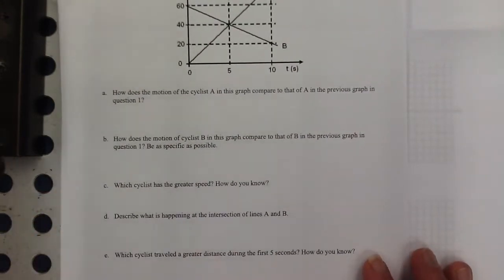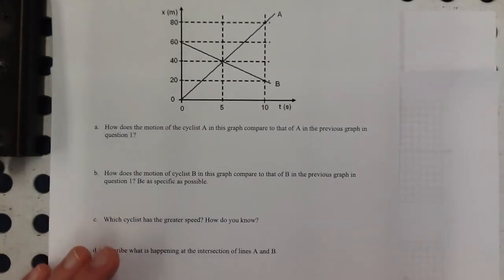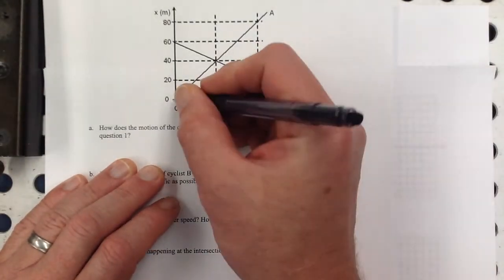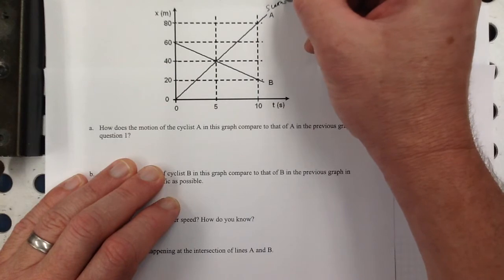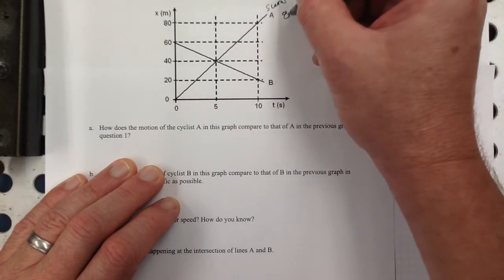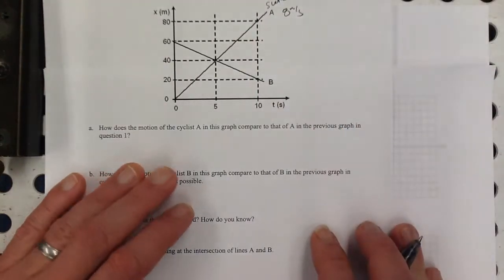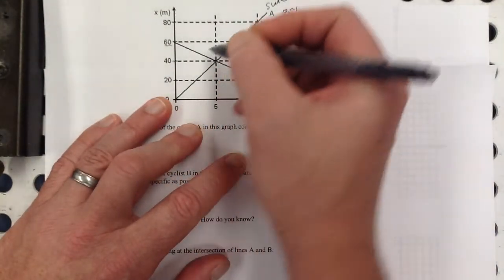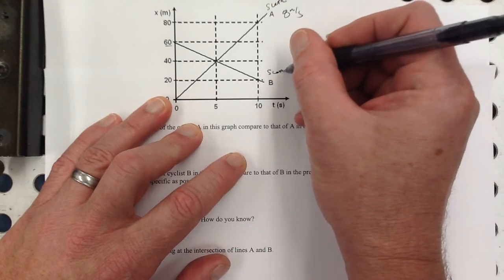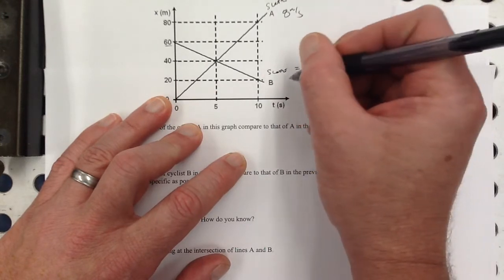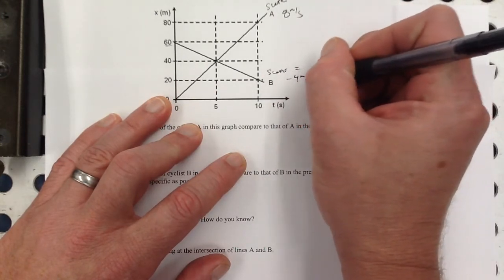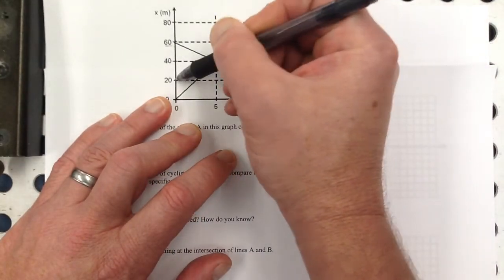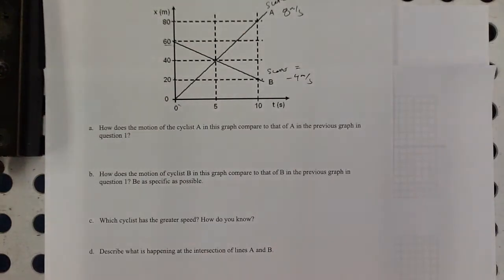How about this? Let's do that quick analysis here. I think the A cyclist is the same, right? It starts at 0 and has a slope or a velocity of 8 meters per second. And then B starts at 60 and has a slope of negative, or in other words, constant velocity of negative 4. So the rise is 60 to 20. That's negative 40 over 10.